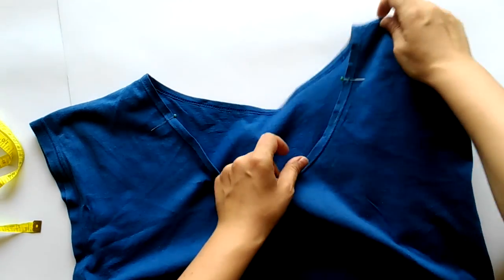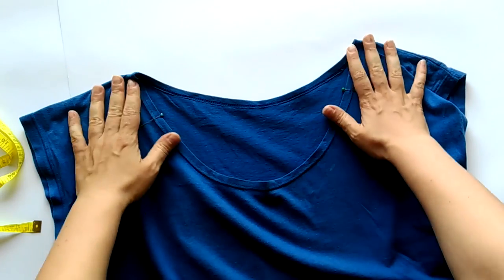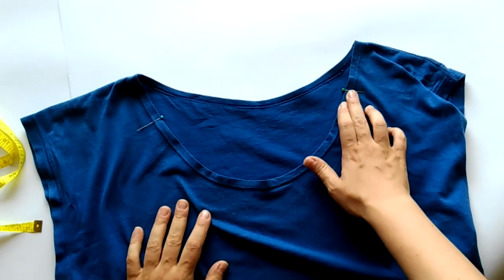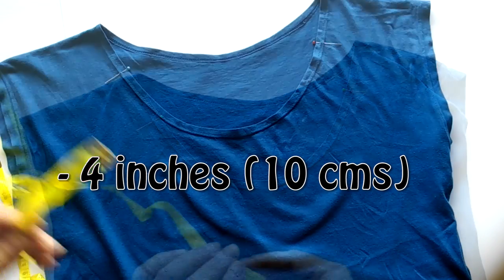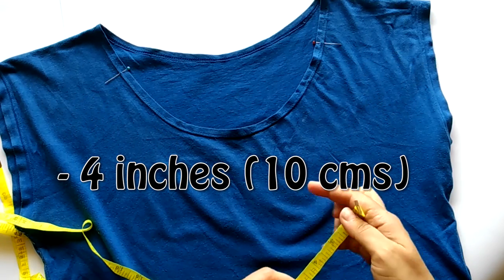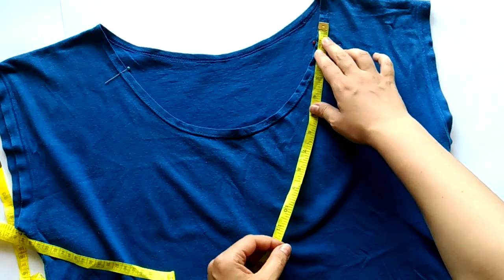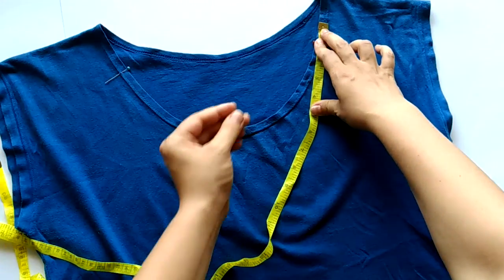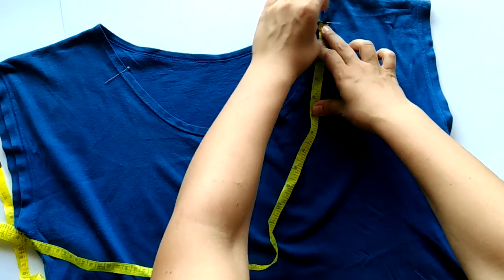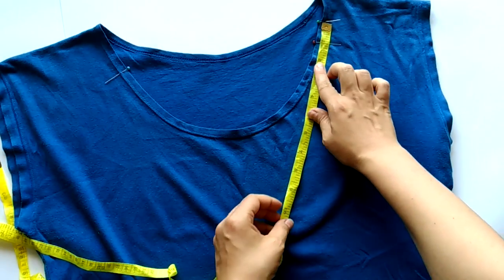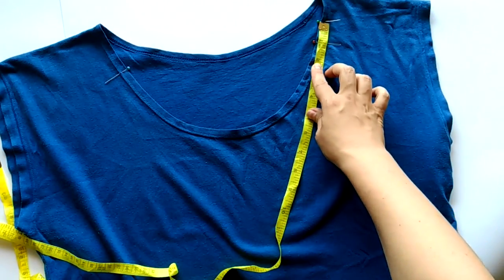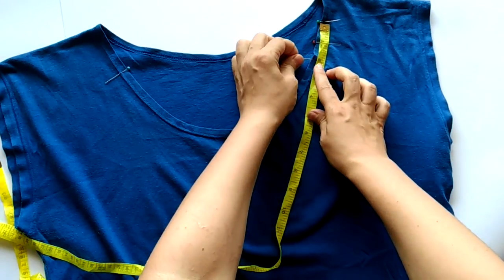I have already measured that I need to remove 4 inches or 10 cm. I'm using the measuring tape to mark how deep the pleats are going to be. In this case, I'm going for one inch deep pleats and I'm going to make two of them on each side. So, I'm marking 1 inch up from the pin for the first pleat and 1 inch down for the second.